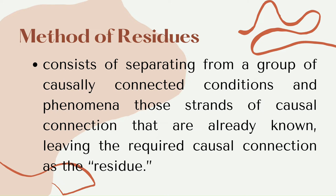The Method of Residues consists of separating from a group of causally connected conditions and phenomena those strands of causal connection that are already known, leaving the required causal connection as the residue. If a variety of causes has been established to produce a variety of effects and we have matched up all causes except one with all effects except one, the remaining effect can be attributed to the remaining cause. The word 'residue' means something that remains after the main part has been taken.